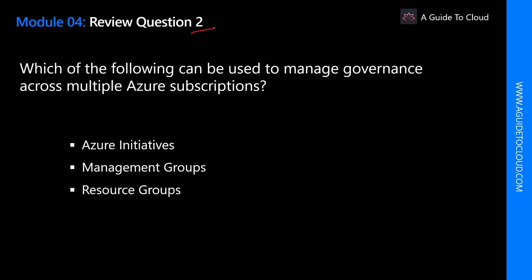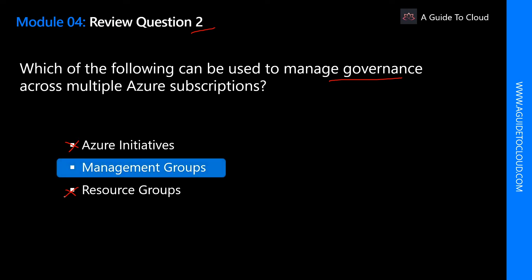Which of the following can be used to manage governance across multiple Azure subscriptions? The key word here is governance across your subscriptions. Azure Initiatives and Azure Resource Group are not correct — a resource group is just a logical container for your resources. The correct answer is Management Groups, which facilitate the hierarchical ordering of Azure resources into collections at a level of scope above subscriptions.